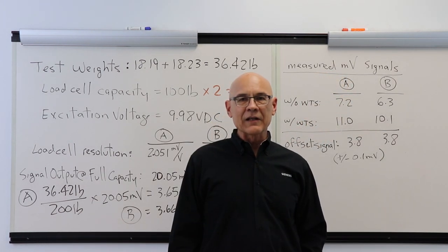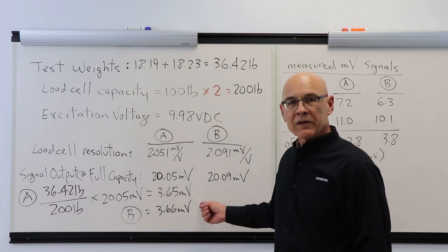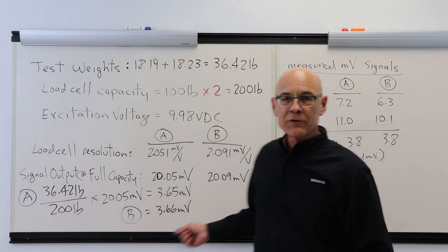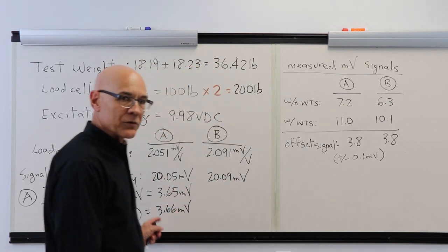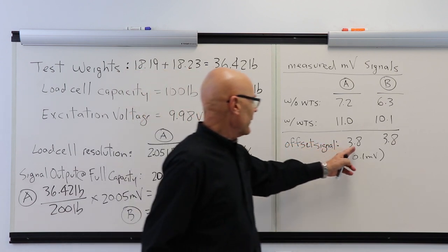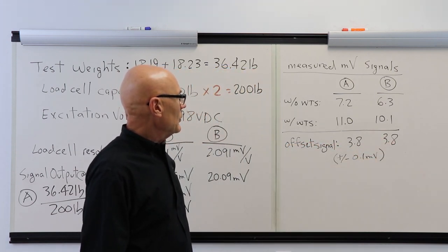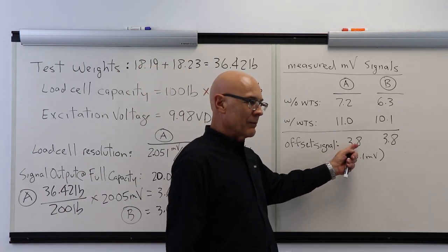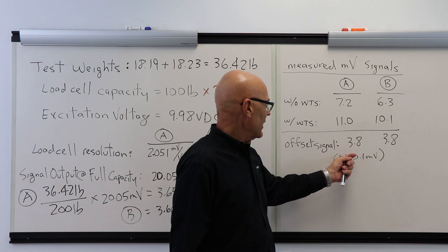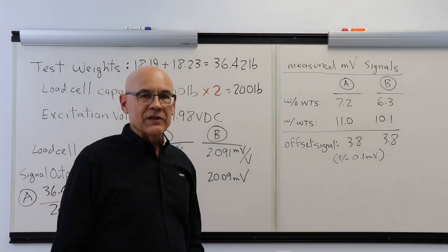Now that we've calculated the millivolt signal that we would have expected, we can compare that to the measured values. We find that the 3.65 and 3.66 millivolts that we calculated compares very favorably to 3.8 millivolts that we measured, especially considering that the tolerance because of the DMM resolution is plus or minus 0.1 millivolt. So I'm going to say that these load cells are in perfectly serviceable condition and they can be used.